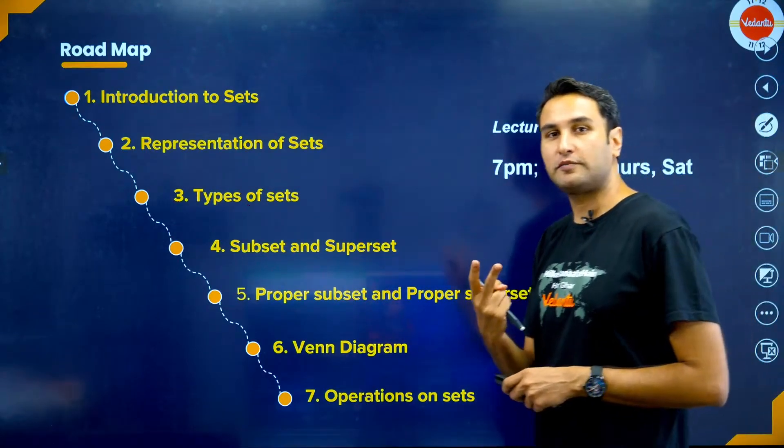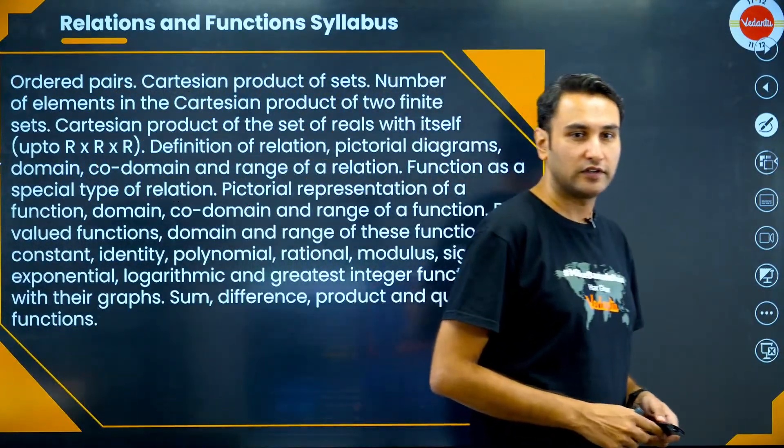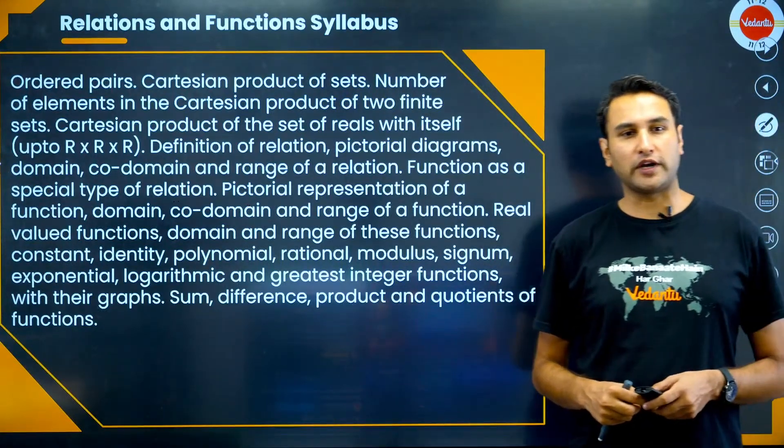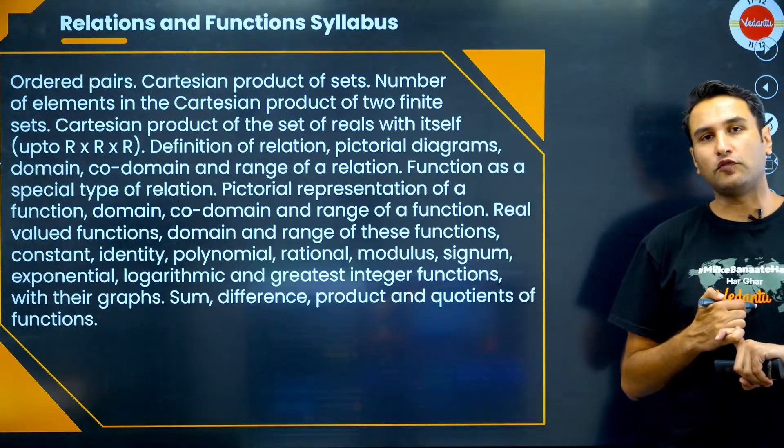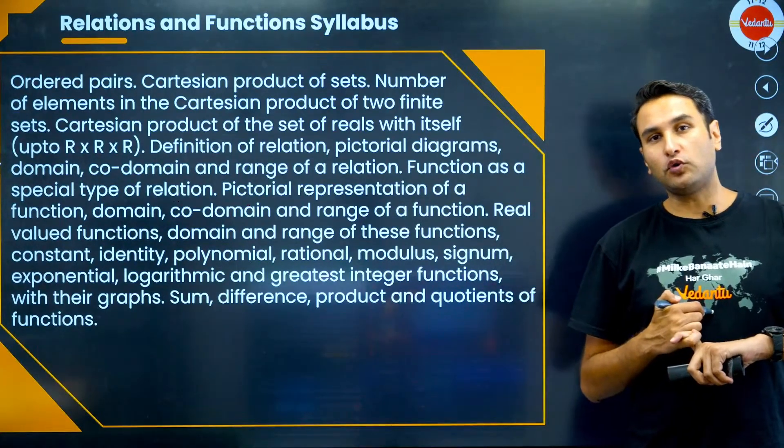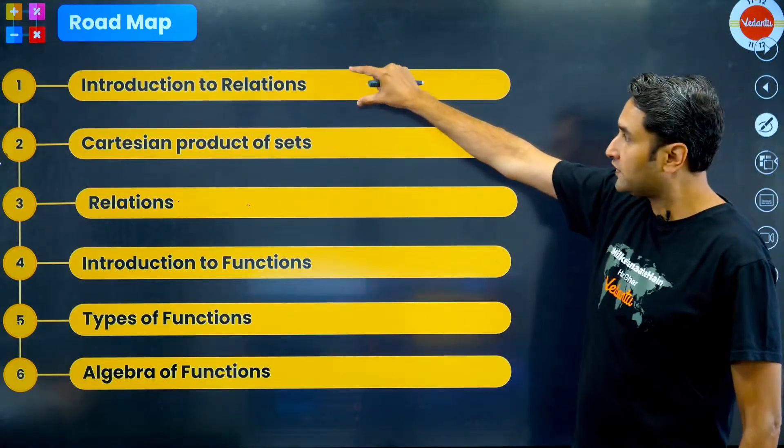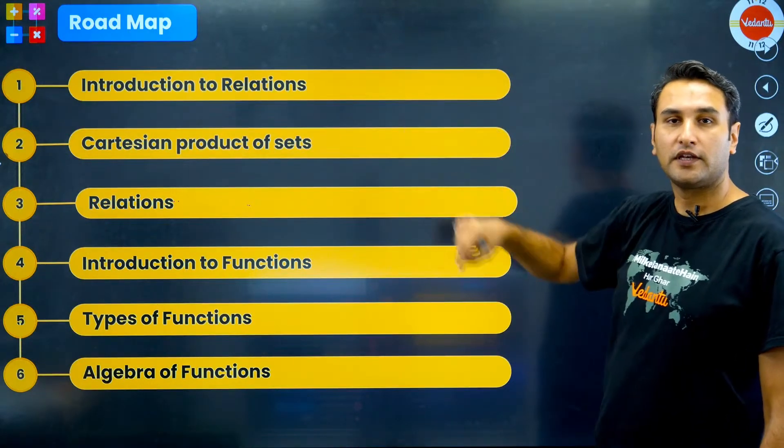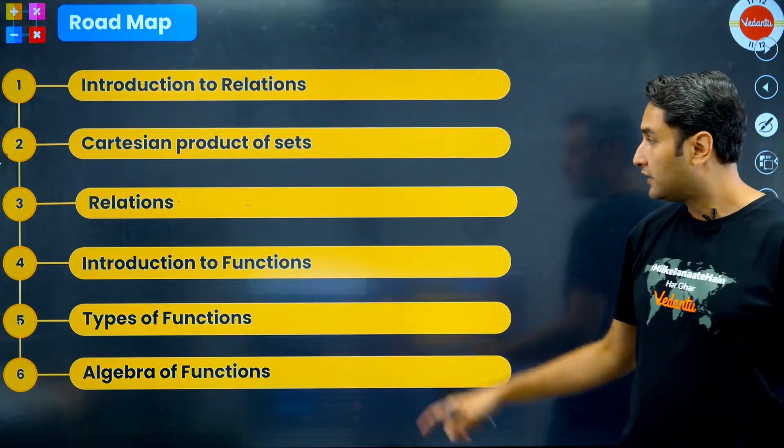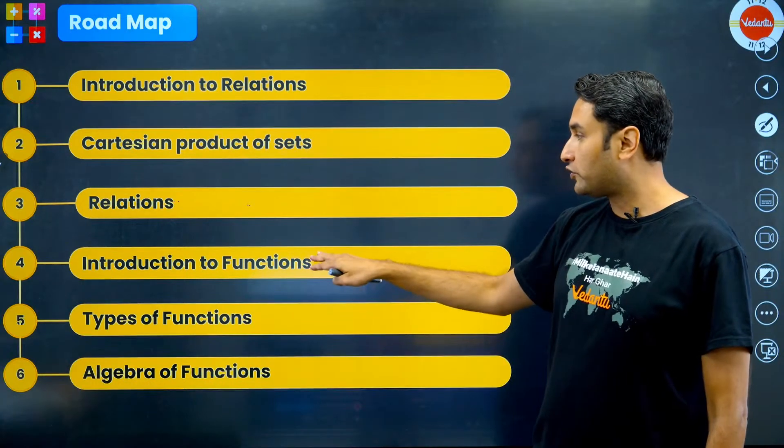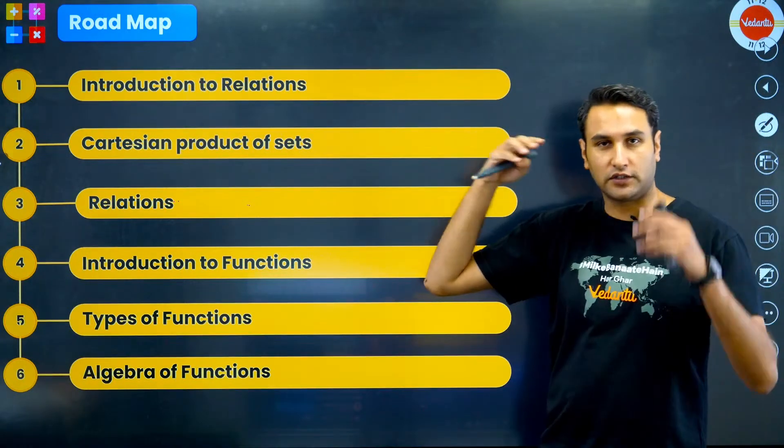These are the concepts I will cover: approximately two classes for sets, and then I will move to relations and functions of class 11th, from ordered pairs, Cartesian product, number of elements, all these concepts. Then we will move on to functions and do all different types of functions. We will first introduce relations, Cartesian products of sets, go deeper into the concept of relations, then move to introduction of functions.